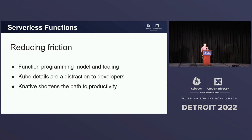Functions. For a lot of developers just coming to Kubernetes, it's a lot, right? There's a lot of mental overhead. There's a lot of things you have to learn. Knative Functions is a programming model and a set of tooling that works to reduce the friction when you're first coming to Kubernetes. It significantly reduces the time to productivity.